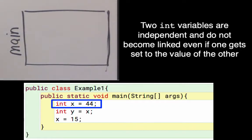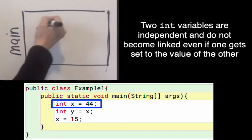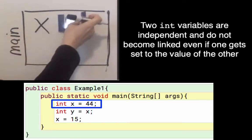So the first line says int x equals 44. We're gonna read that equals sign as gets. So int x gets the value 44. That creates a variable named x and it gets the value 44.